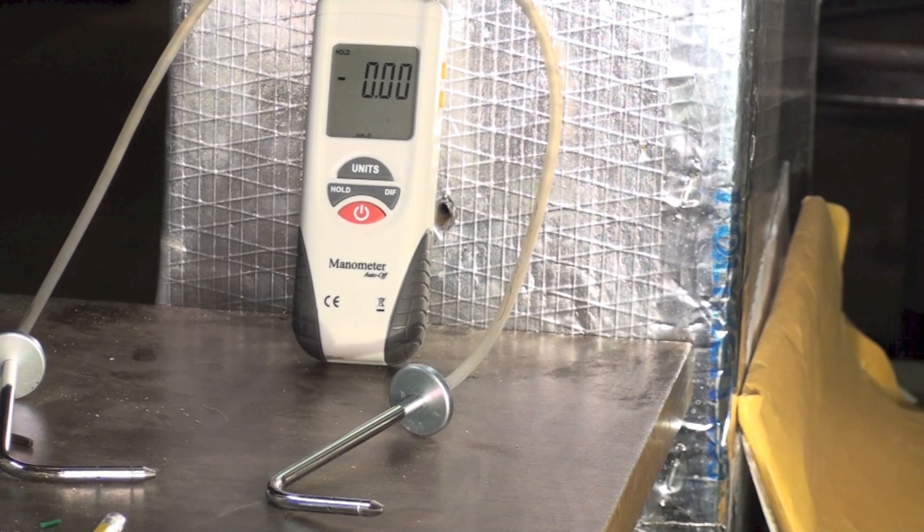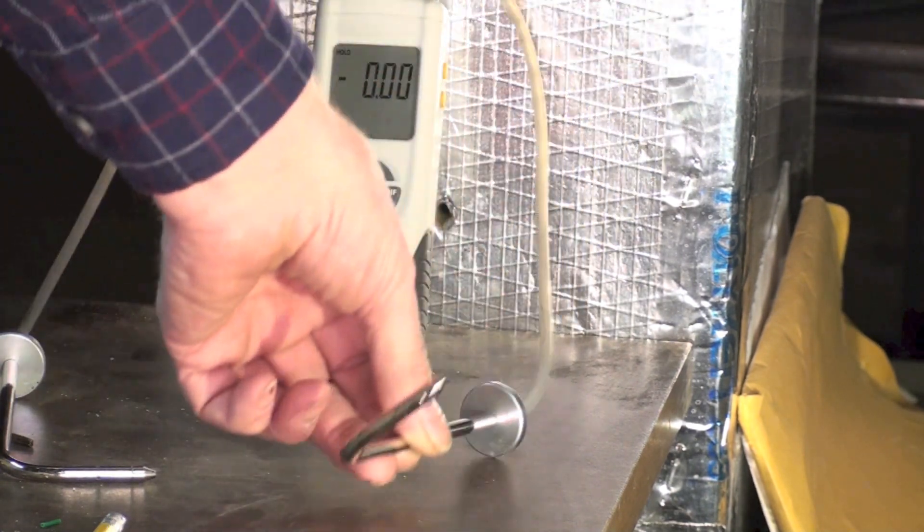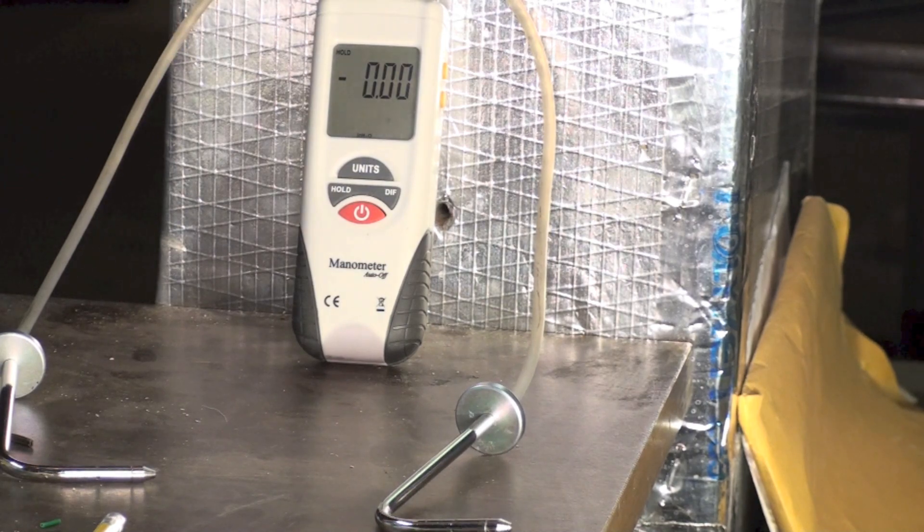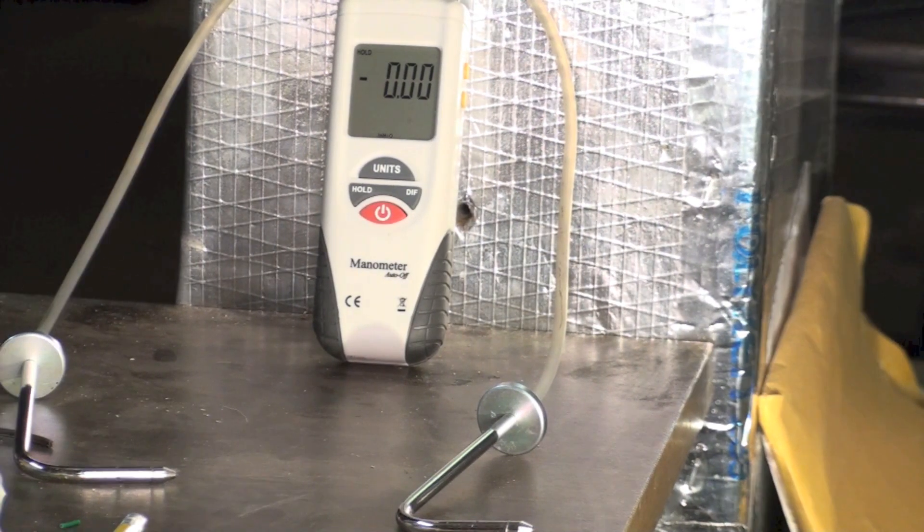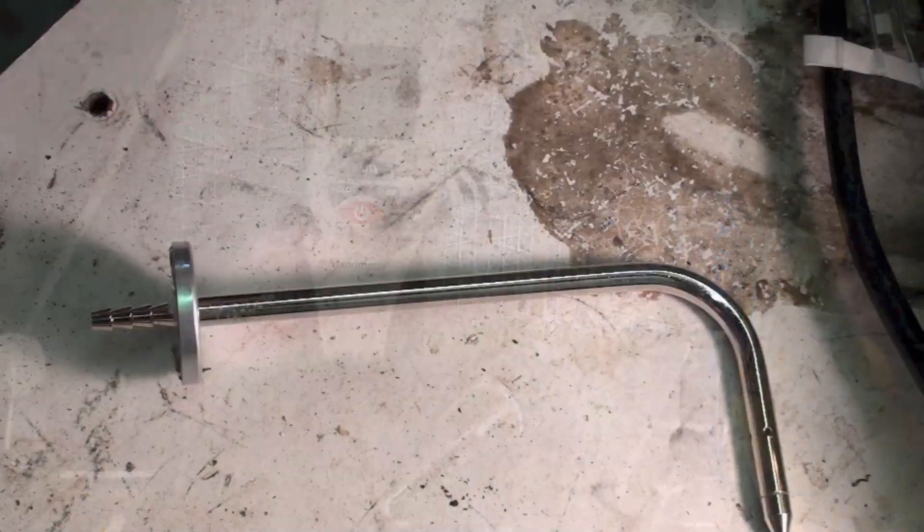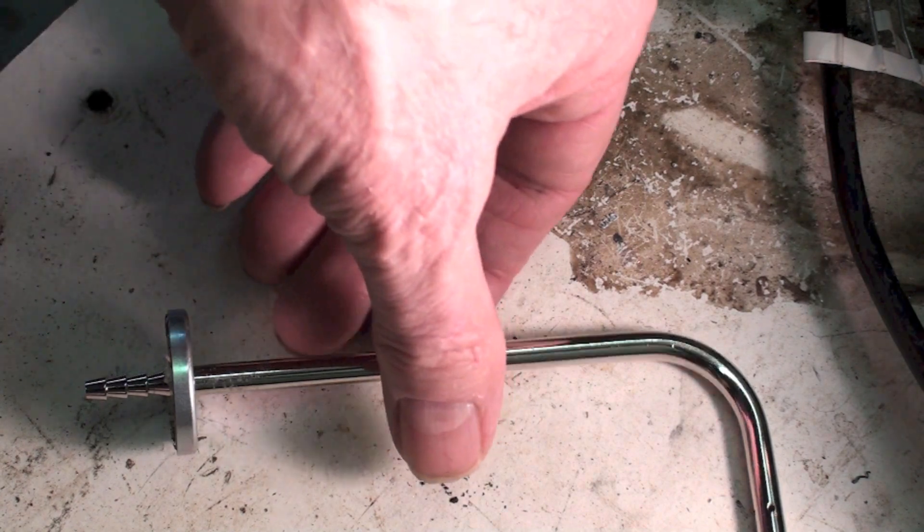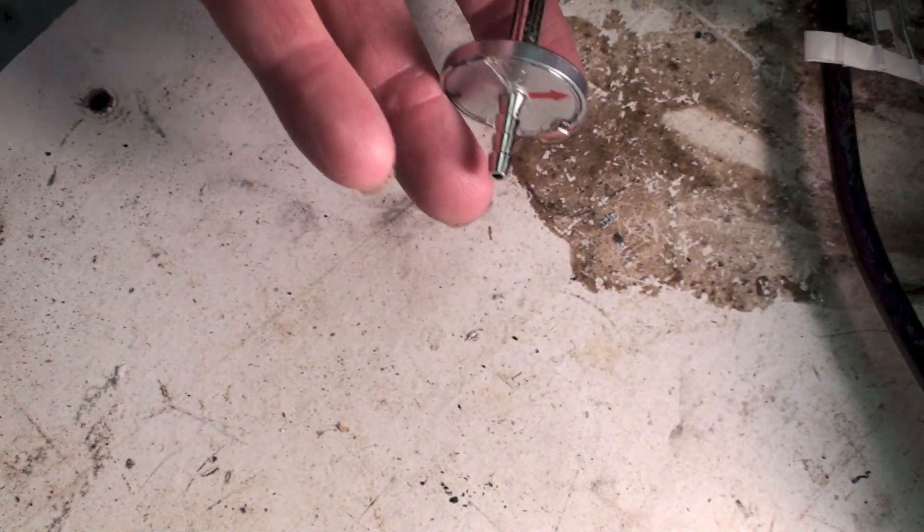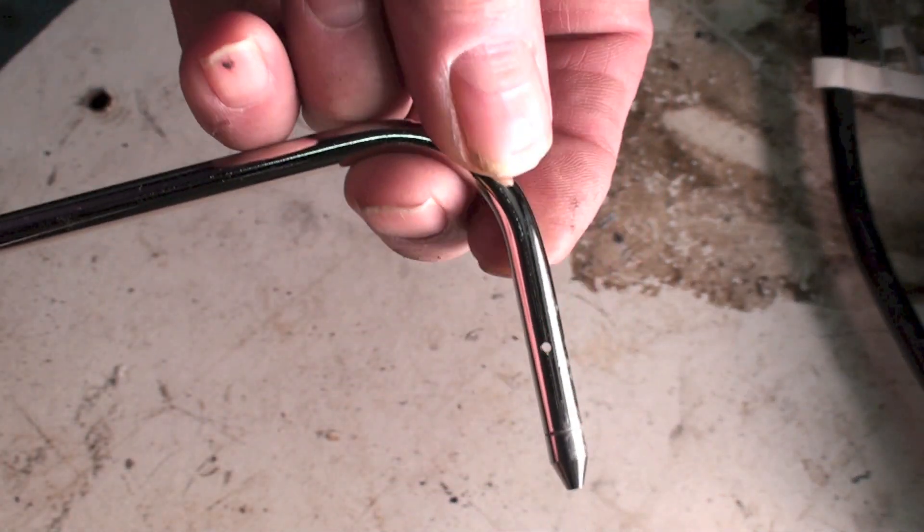We've got these probes that we use. Most of the time we'll probably only use one probe at a time, but you can use two of them - one on one side of a component and one on another. These probes, if you look closely at them, have the barb that you hook the hoses up to, and there's a couple of holes here in the side of this probe.